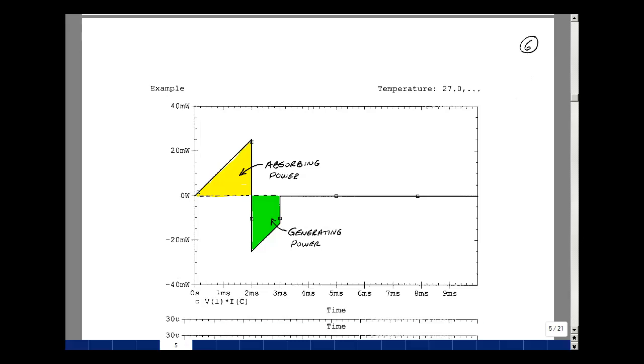Now in this probe post processor we can do algebraic equations and so we can multiply the voltage across the capacitance times the current entering its plus terminal. The notation in Spice is that the first node is positive and the second node is negative. This is true for all elements in the Spice program. You can see here that the power absorbed is positive and then you can see that it's also negative and zero.